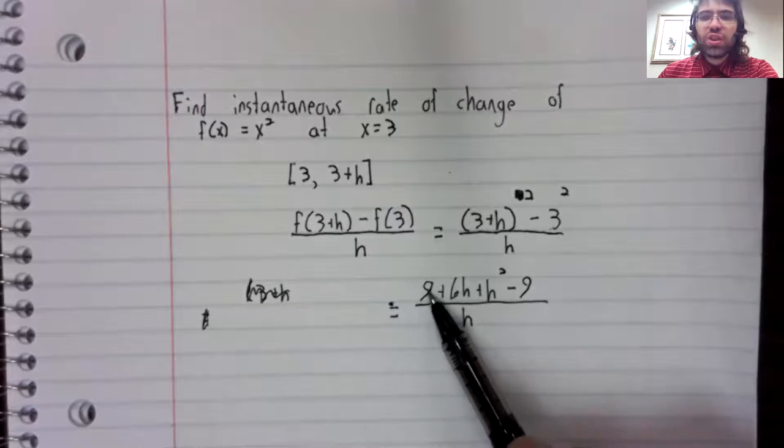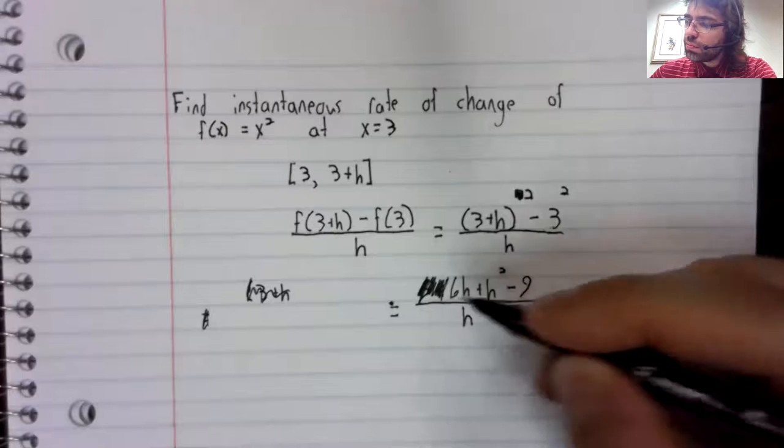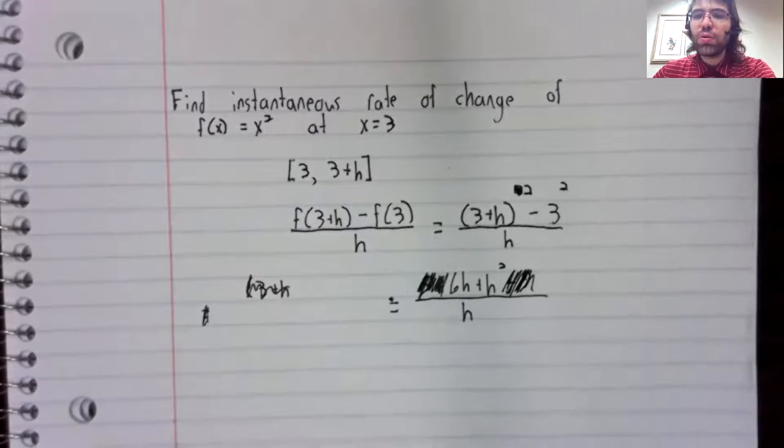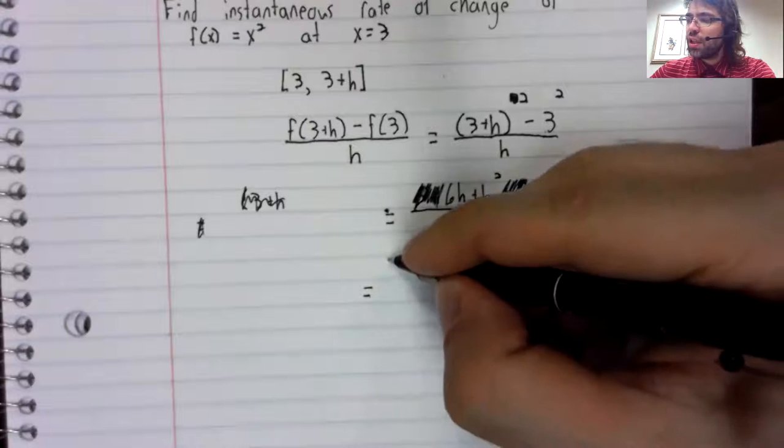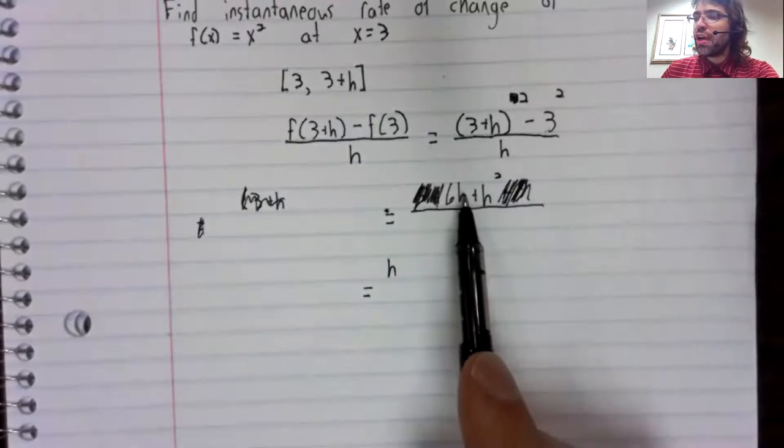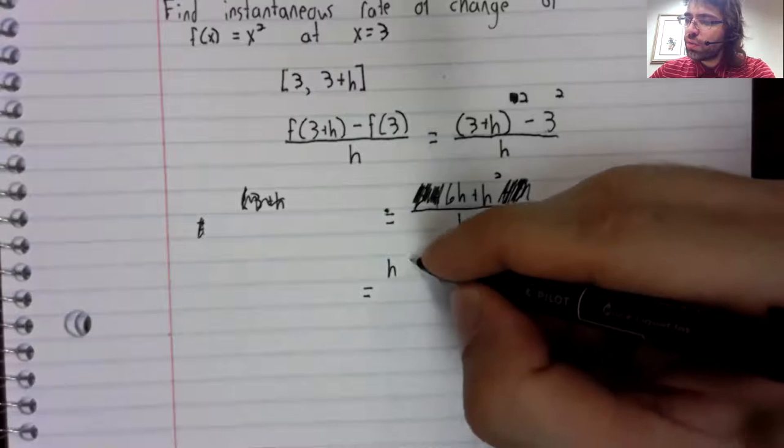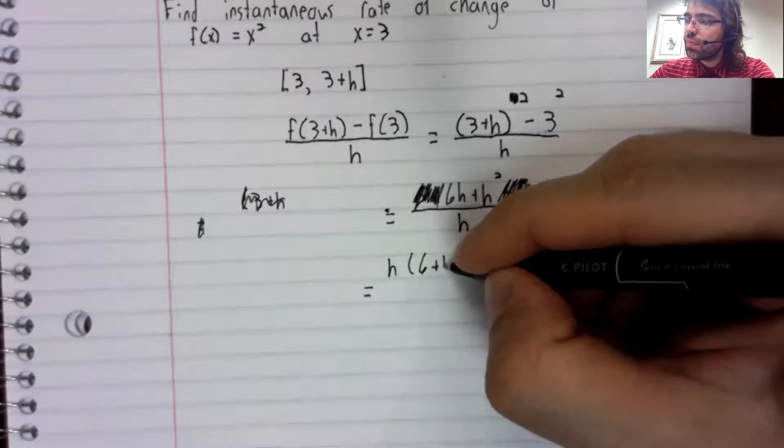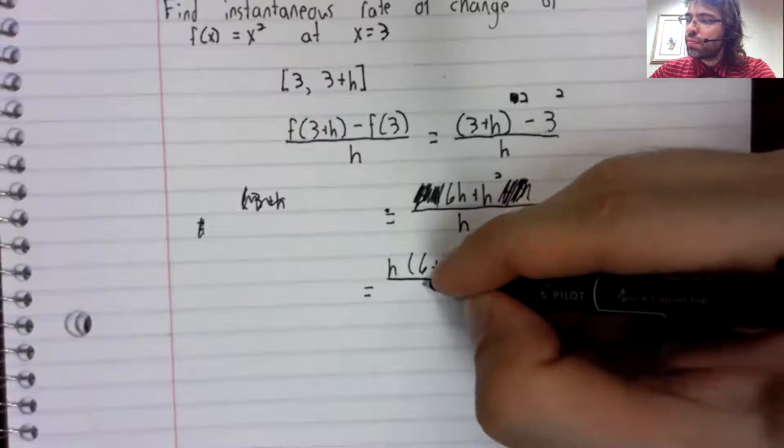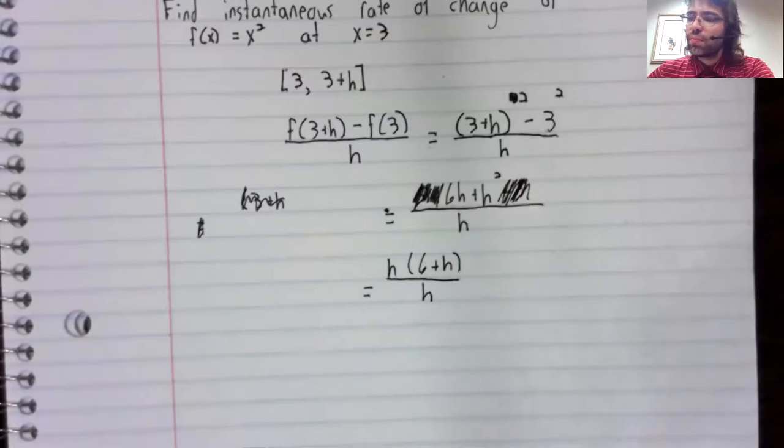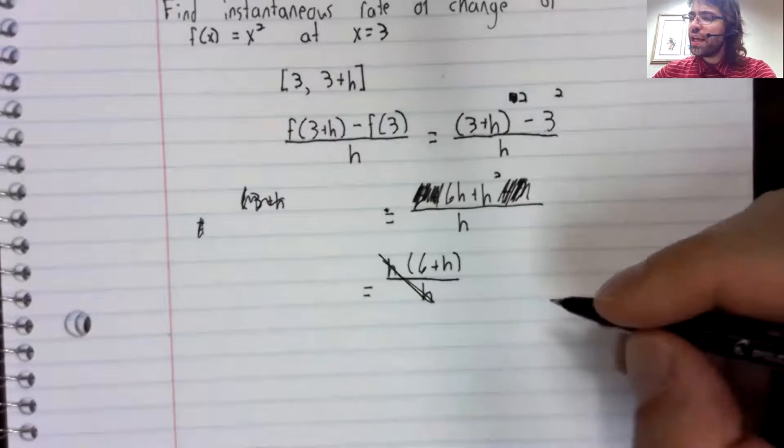And you see nine and negative nine, those terms go away. And we can pull an h out. We've got an h here and an h here.